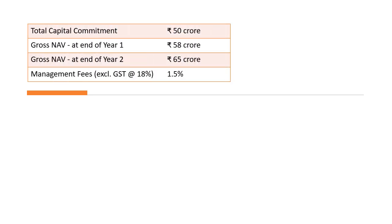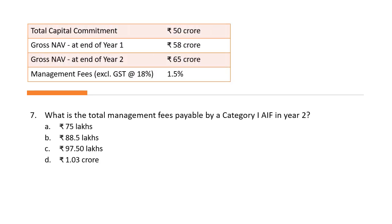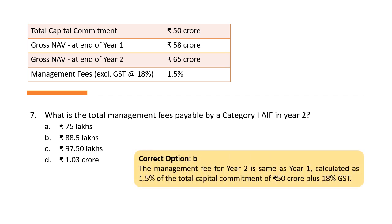Question 7: using the same data, what is the total management fee payable by Category 1 AIF in the second year? The management fee for the second year is the same as the first year — calculated as 1.5% of total committed capital of 50 crores plus 18% GST. So the answer is again 88.5 lakhs, which is option B.